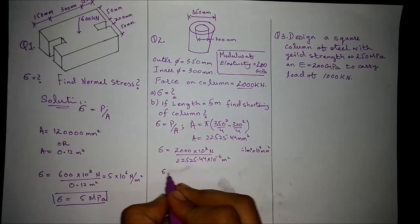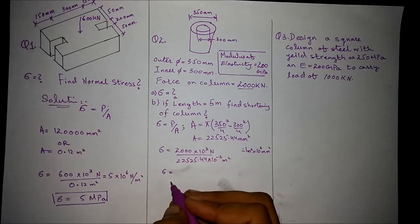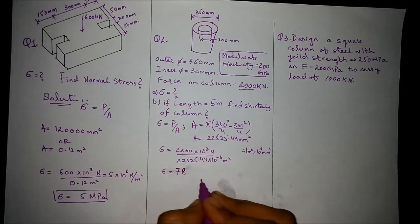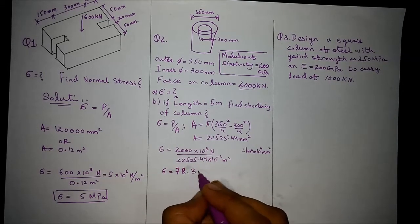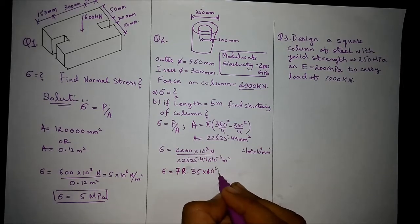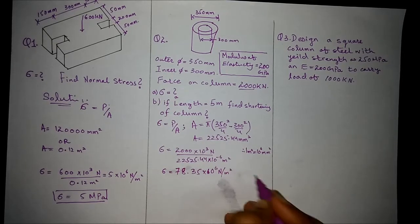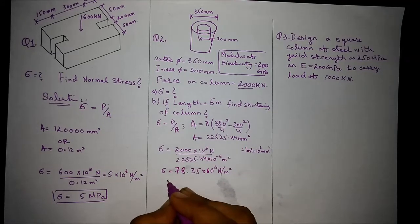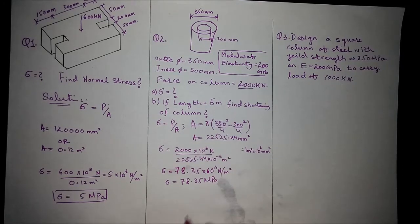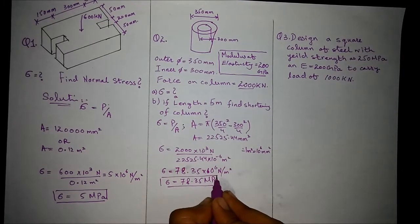The answer comes out to be 78.35 times 10^6 newton per meter square, or 78.35 times 10^6 newton per meter square. That is the required answer of part A.